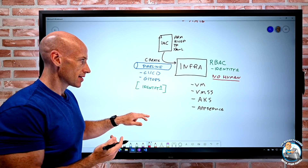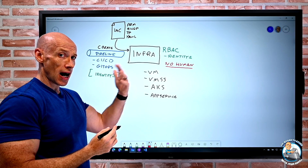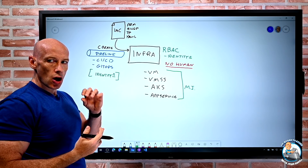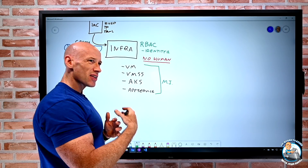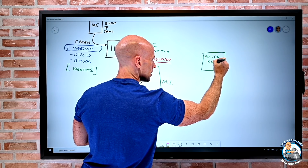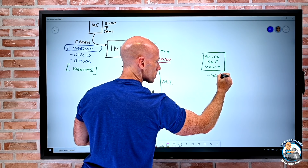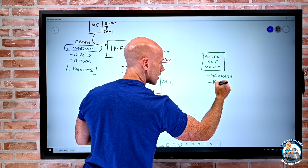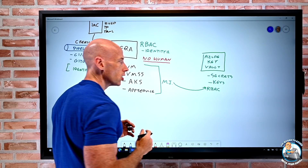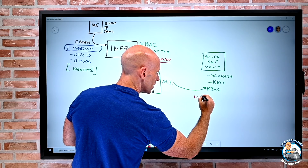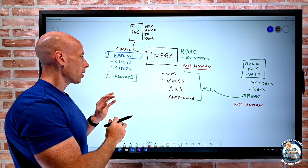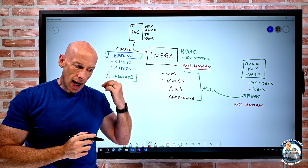This is where managed identity comes in. All of these resources, if they want to talk to other resources, use managed identity — it's inherent to the resource, only it can be that resource. If I have a secret or something I need, I can store that in Azure Key Vault — secrets, keys, or certificates. The RBAC on Key Vault would only be the managed identity. No humans have access. In my production environment, why do humans need access to most of these things? Managed identities and pipelines have the permissions to make this work.